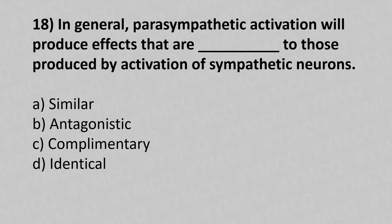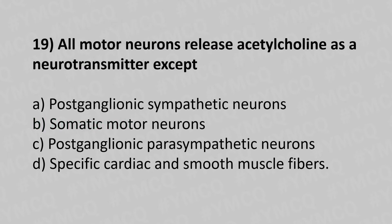Question 18: In general, parasympathetic deactivation will produce effects that are ___ to those produced by the activation of sympathetic neurons. Option A: similar. Option B: antagonistic. Option C: complementary. Option D: identical. The answer is Option B — antagonistic.